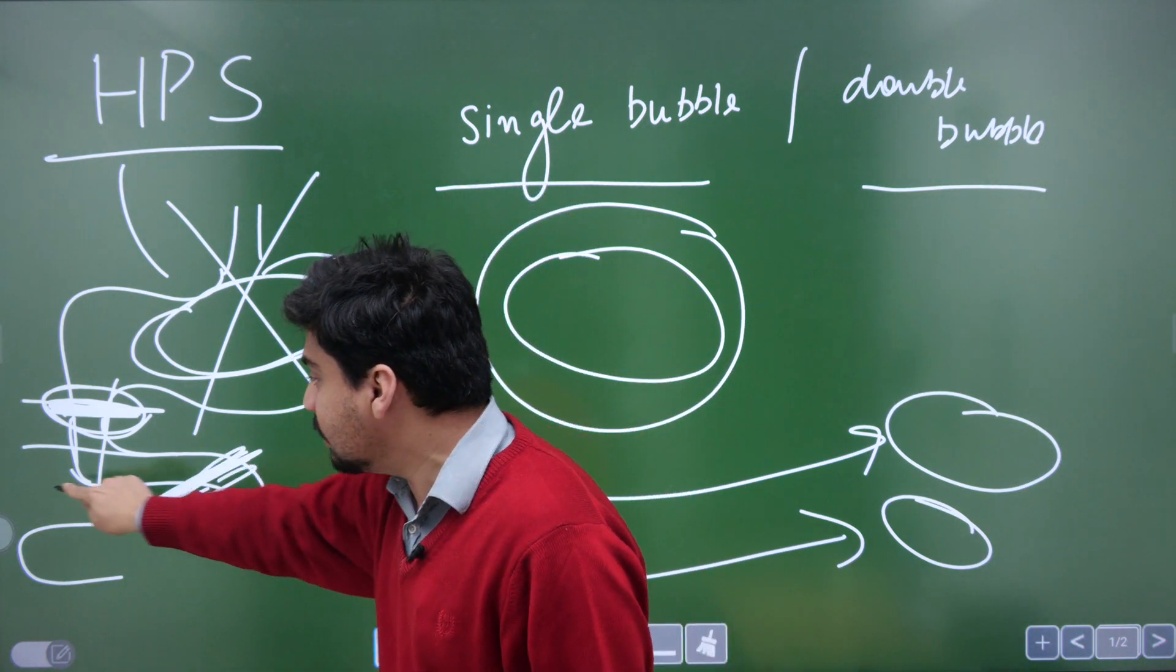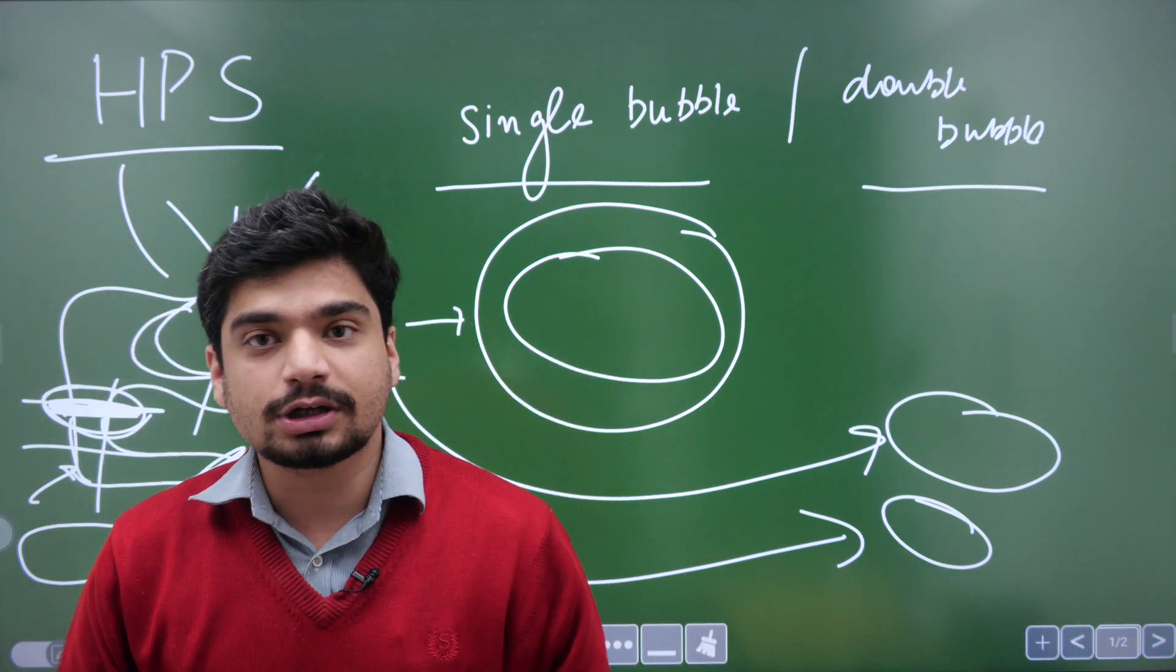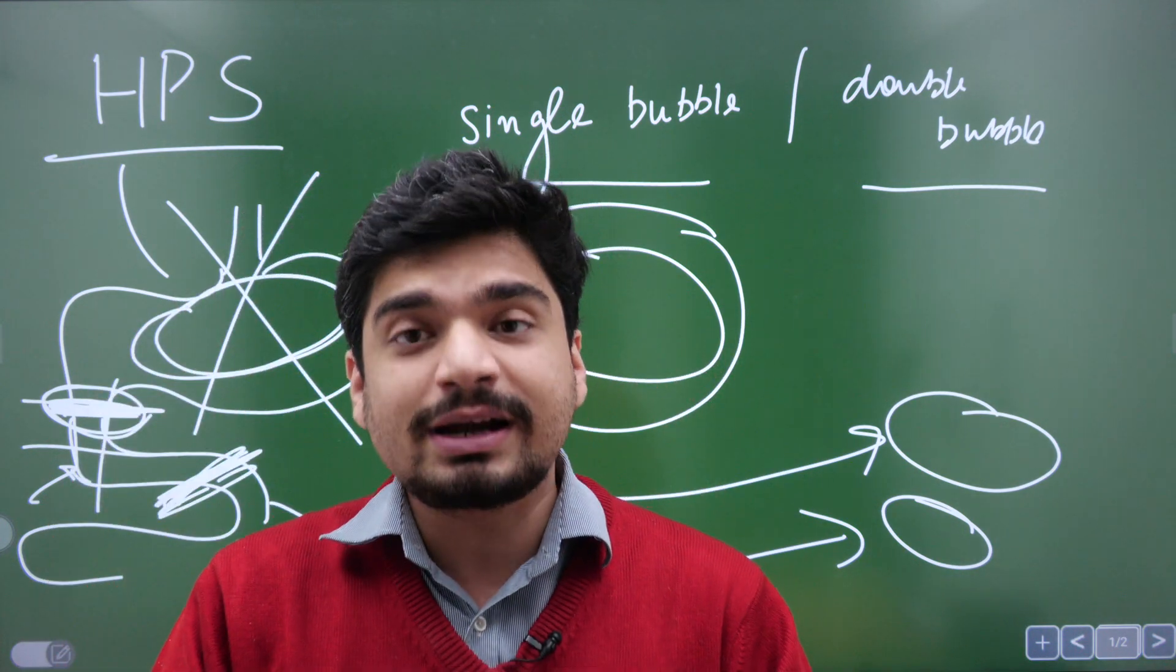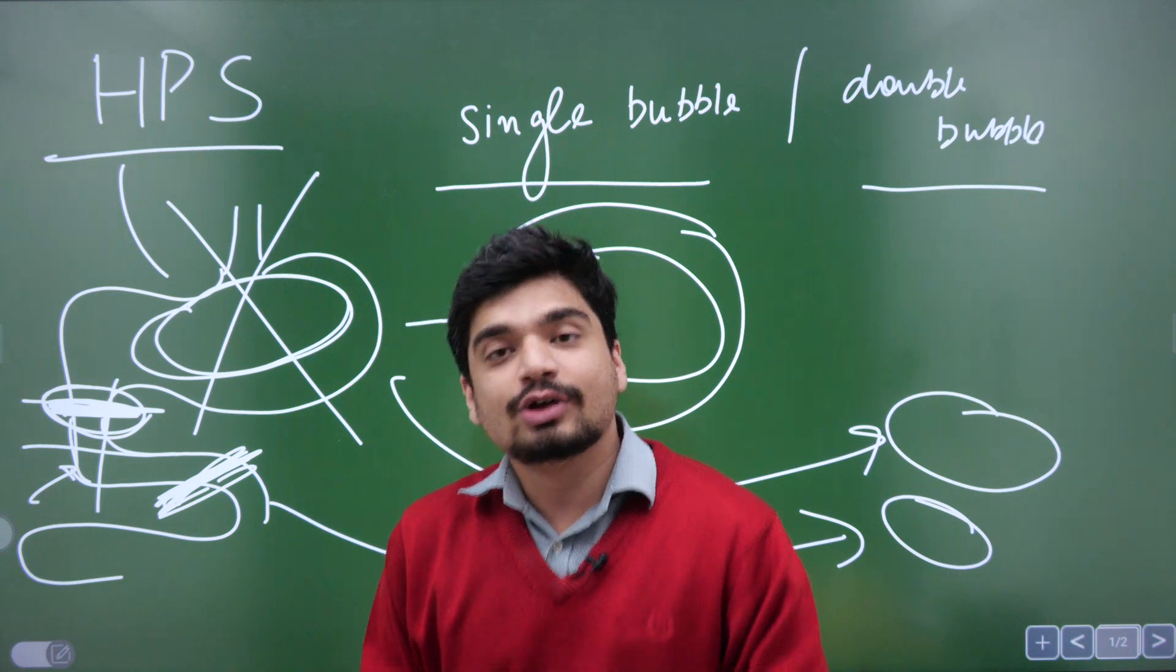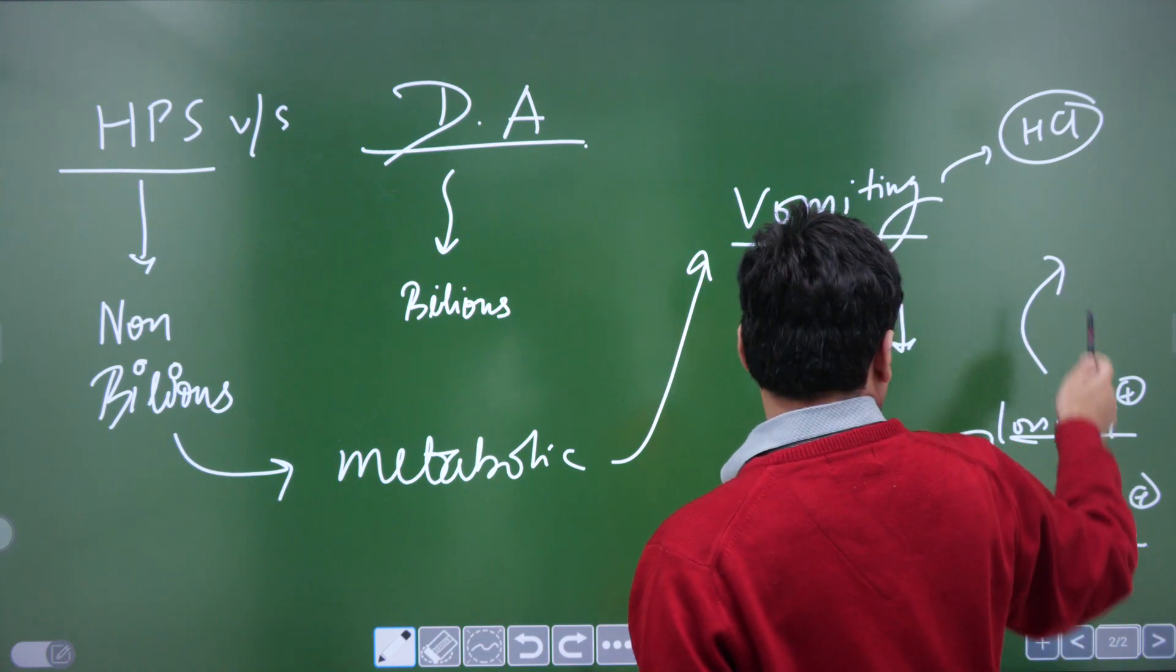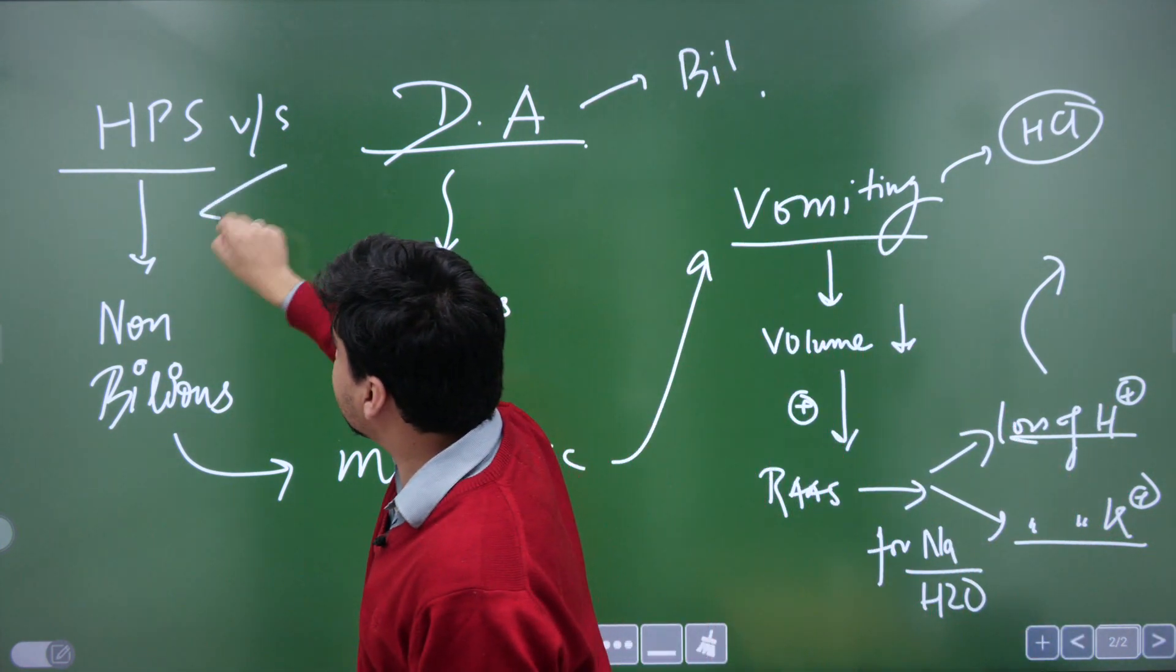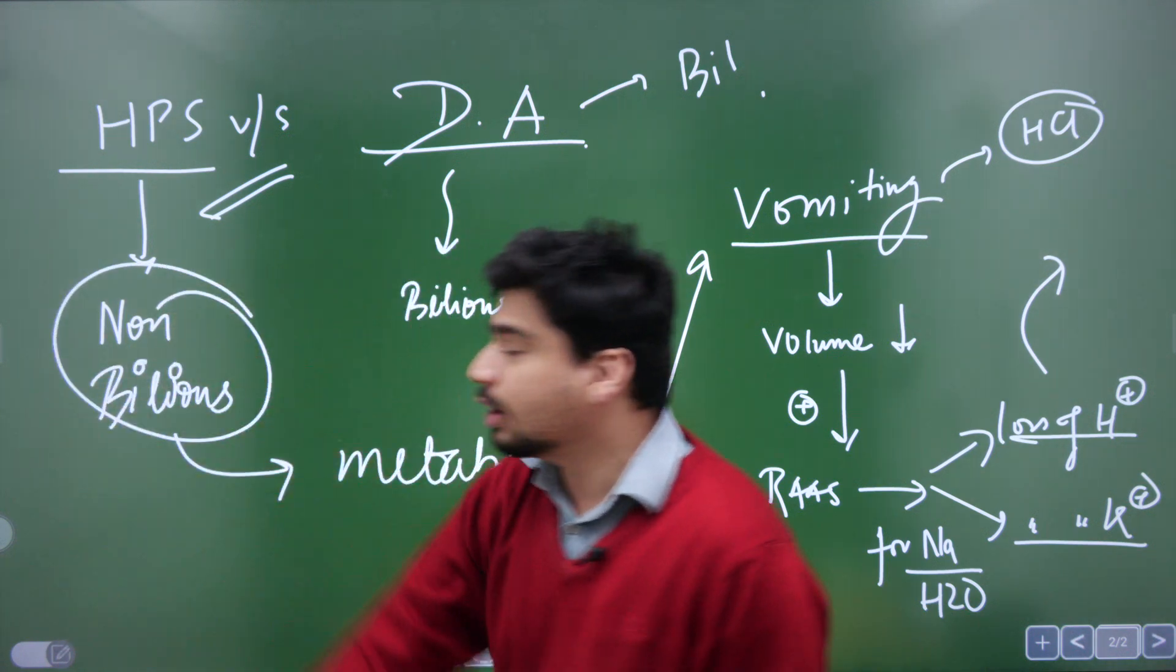But if the obstruction occurs at this level, bile is being secreted here. And since it's obstructed, when the infant will vomit it out, bile will be present over there. So duodenal atresia will have bilious vomiting, while hypertrophic pyloric stenosis will have non-bilious vomiting.